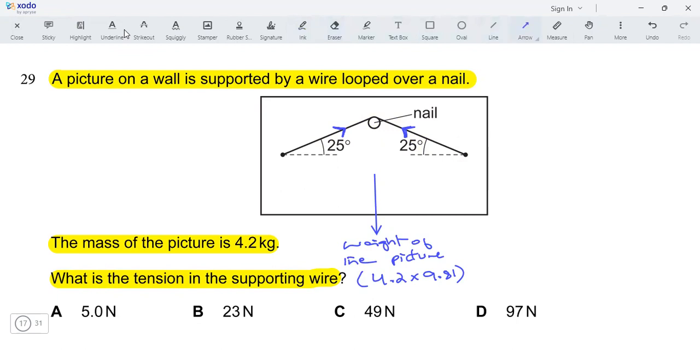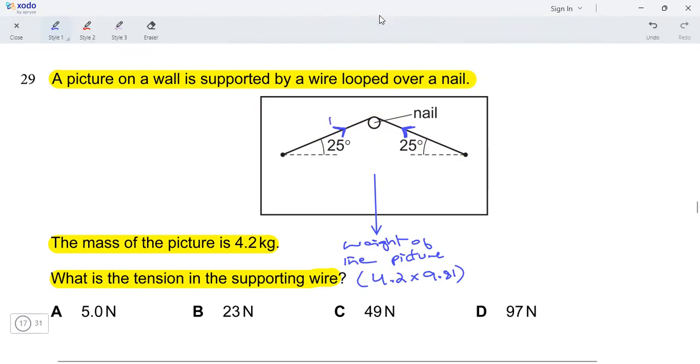Now we need to dissolve the tension forces into their vertical and horizontal components. So the two components should go something like this for both sides.